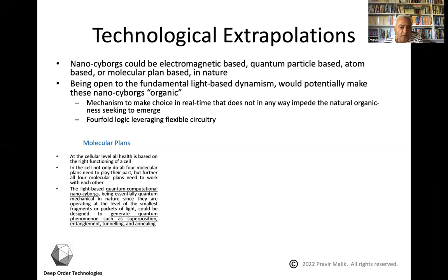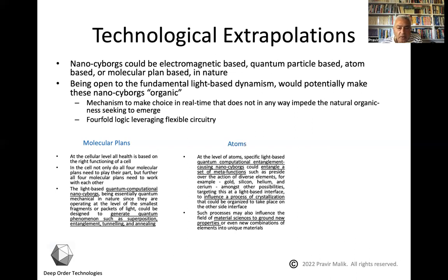We can envision quantum computational nano-cyborgs that could generate quantum phenomena such as superposition, entanglement, tunneling, and annealing. For example, taking a healthy well-functioning protein or cell and superposing it on another cell to create an essential state of healing. If we think about atoms, we can think of naturally occurring entanglement-causing nano-cyborgs that would entangle a set of meta-functions. If we think about gold, silicon, or a number of other elements — each representing some function — it would be possible to entangle these, not chemically mix them, but entangle them to influence a process of crystallization that may create different kinds of materials with new properties.